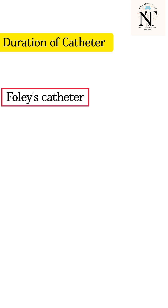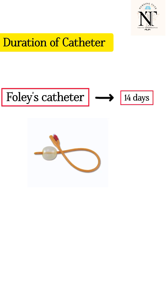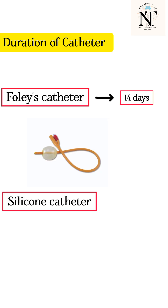Regarding how long a catheter can be in place: a Foley's catheter can be left in place for 14 days, whereas a silicone catheter is used for chronic care and may be left in place for 90 days.